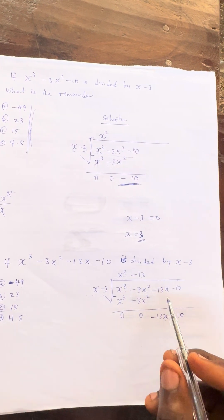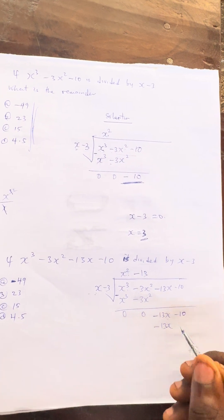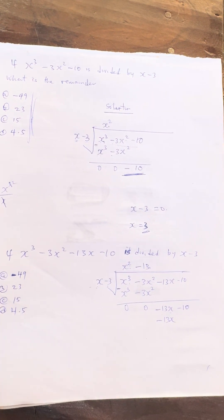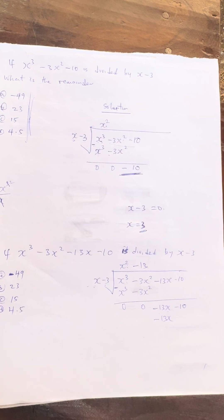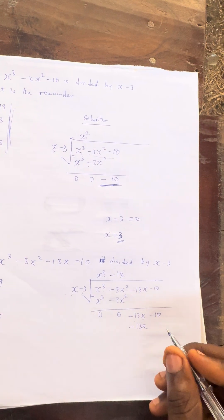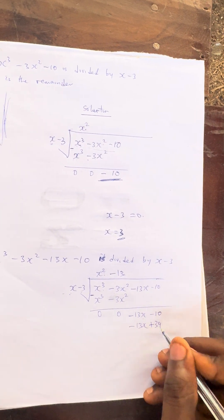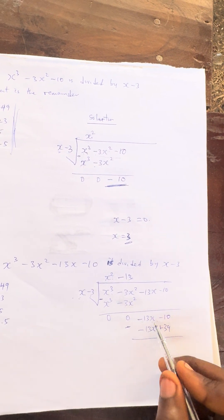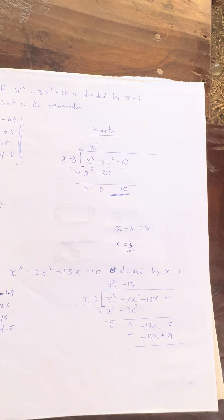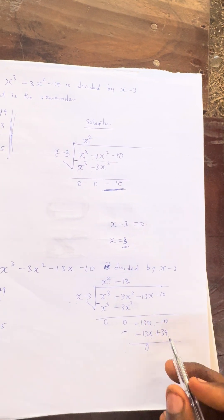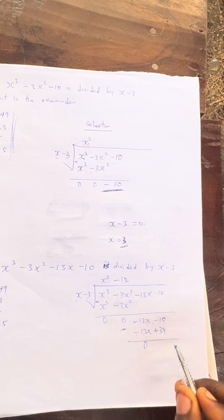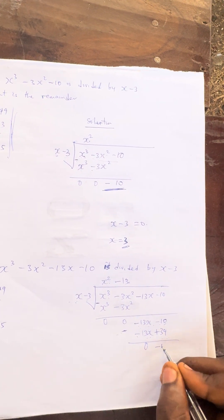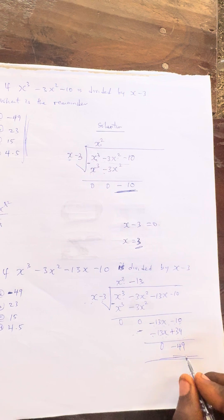Now divide: minus 13x divided by x gives us minus 13. So minus 13 times x is minus 13x, and minus 13 times minus 3 gives us plus 39. After subtracting, minus 13x minus (minus 13x) is 0. Then minus 10 minus plus 39 gives minus 10 minus 39, which is minus 49. So the remainder is minus 49, which is Option A.